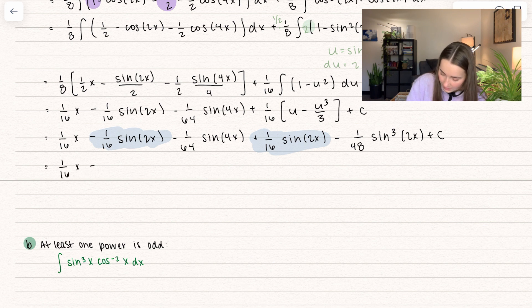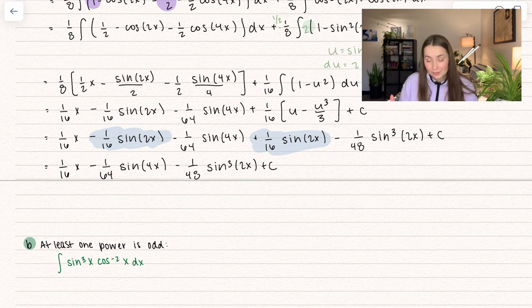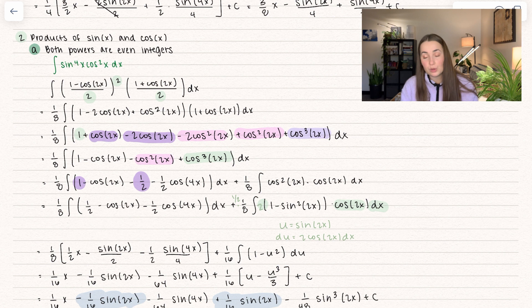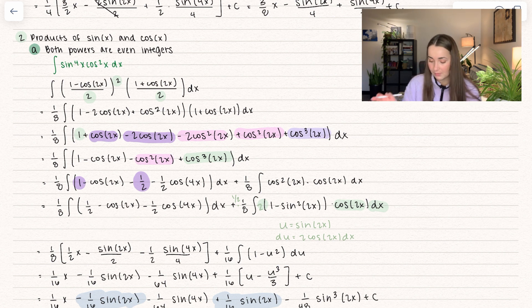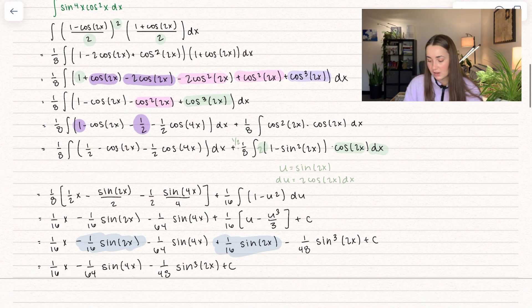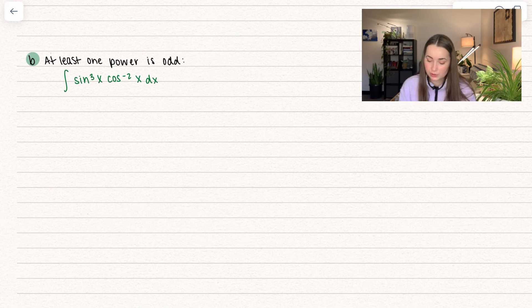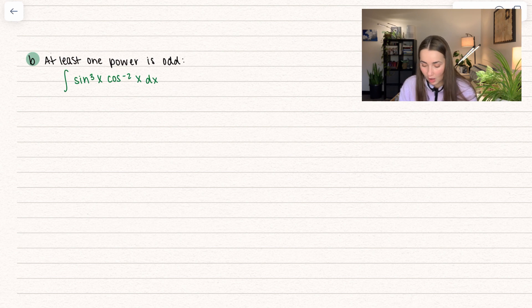Writing out the full solution: 1 sixteenth x minus 1 over 64 sine of 4x minus 1 over 48 sine cubed of 2x plus C — that is our solution. There are a lot of moving parts here. Use the double angle identities to get everything in terms of cosine of 2x, and from there pick and choose the other rules. When we had cosine cubed, we used the odd power rule. The other case is when at least one power is odd.